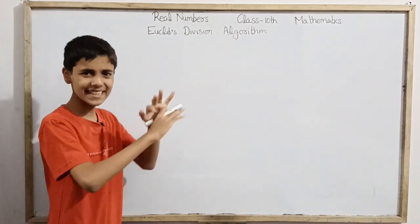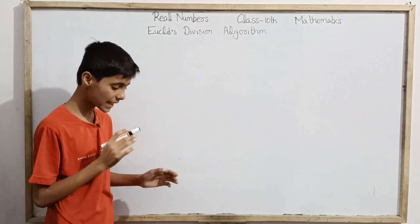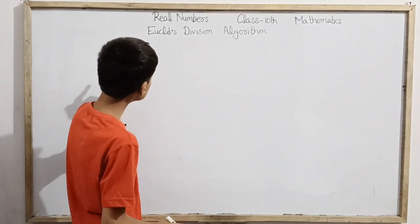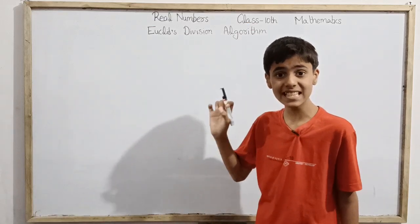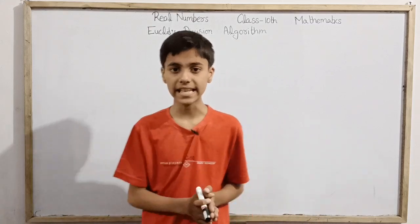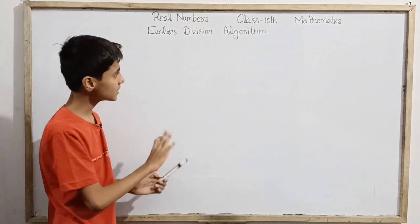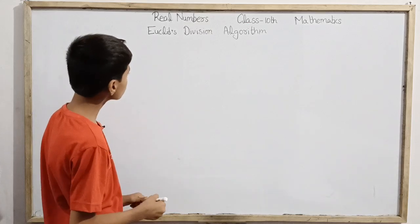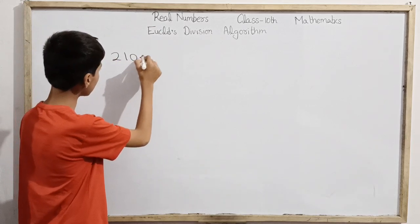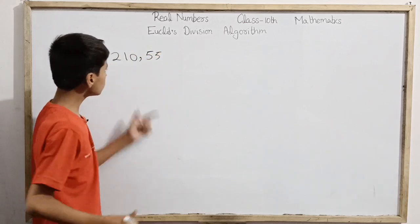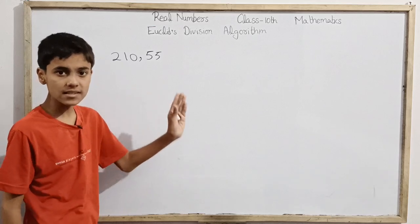Euclid's Division Algorithm is a series of well-defined steps where we can find the HCF or GCD of any two positive integers using the laws of Euclid's Division Lemma and the previous theorem we just proved. Let's take two integers: 210 and 55.